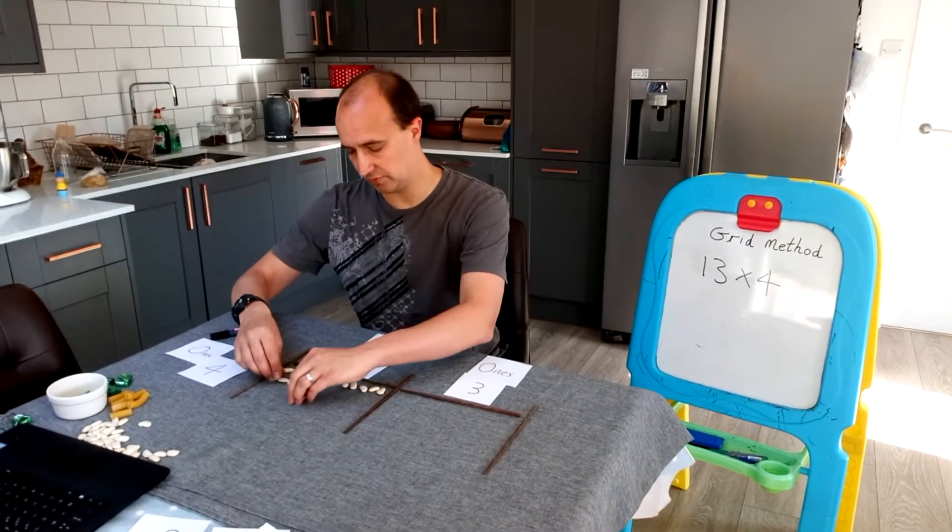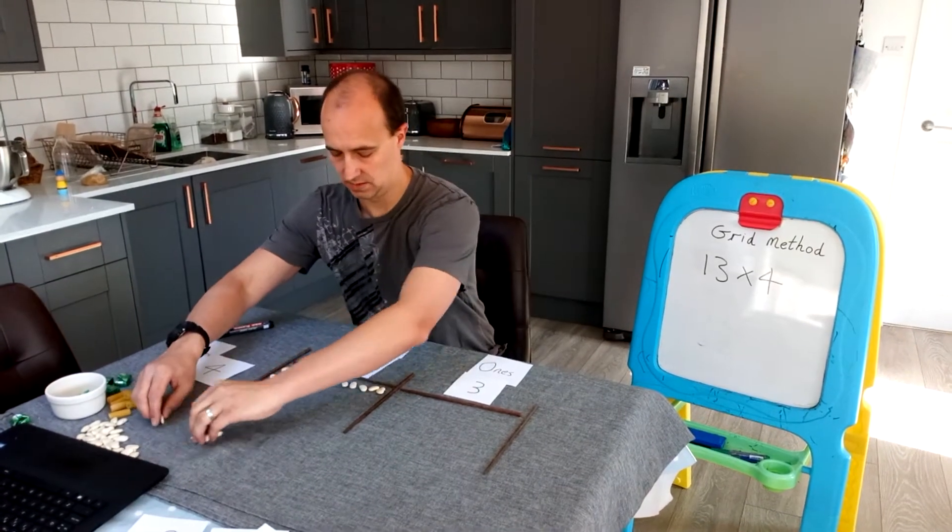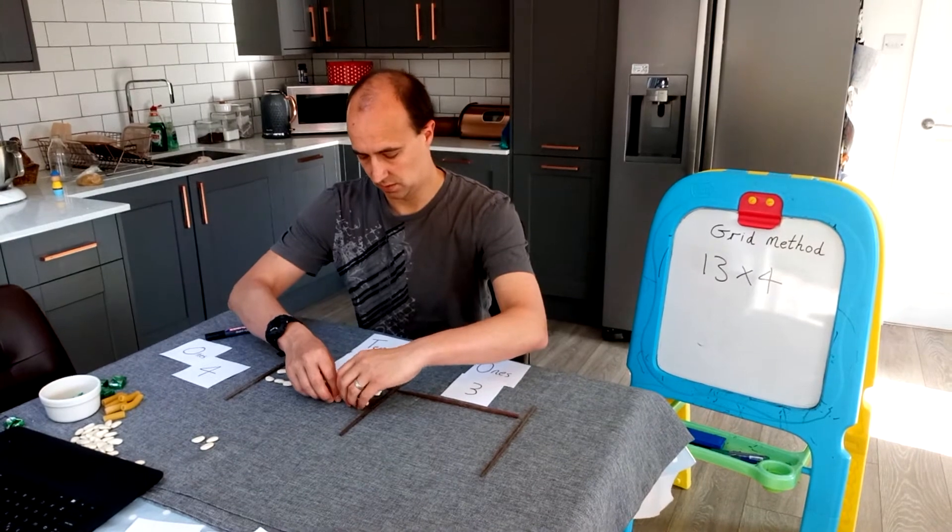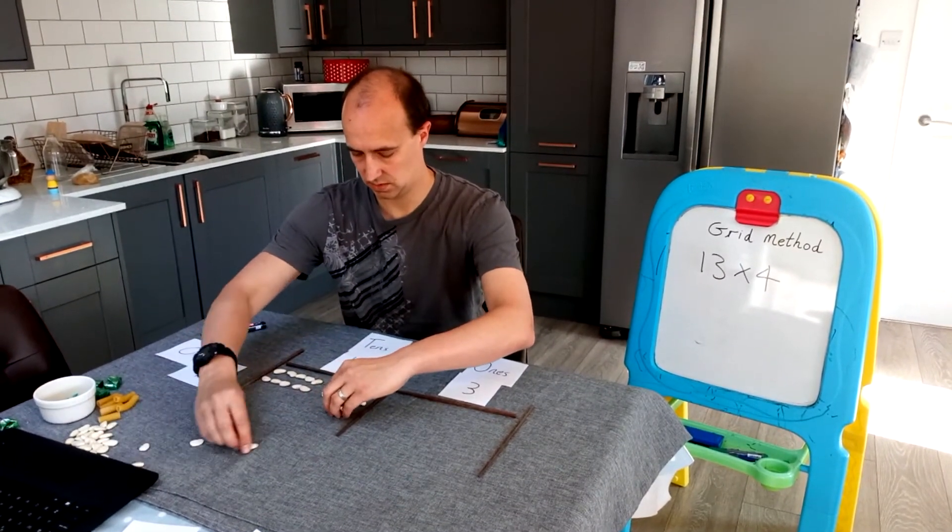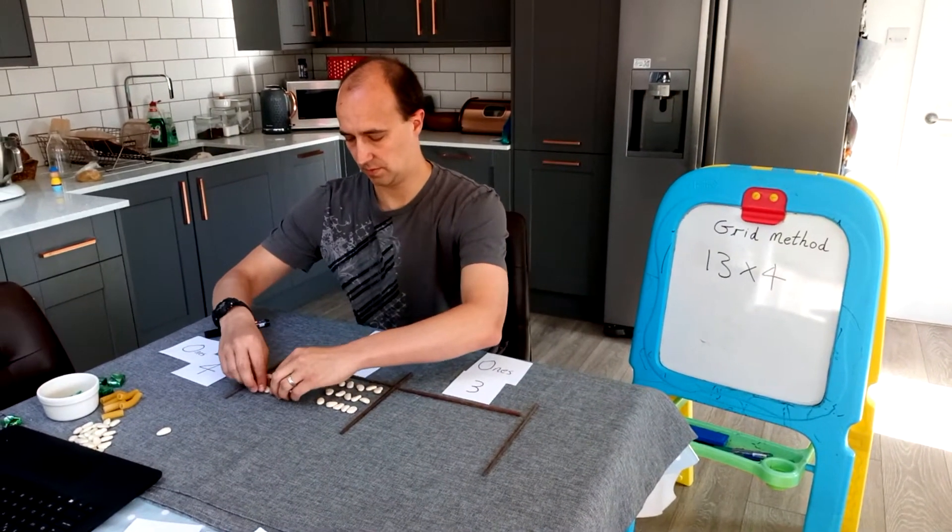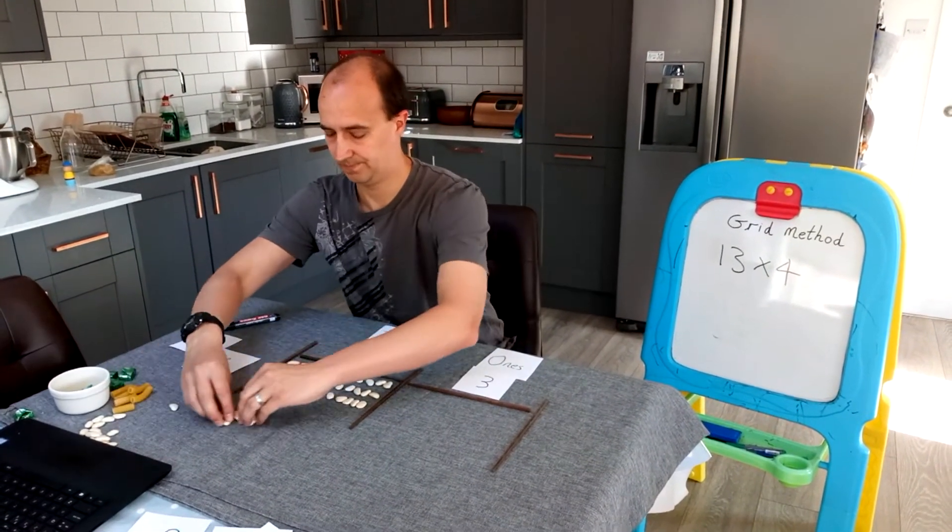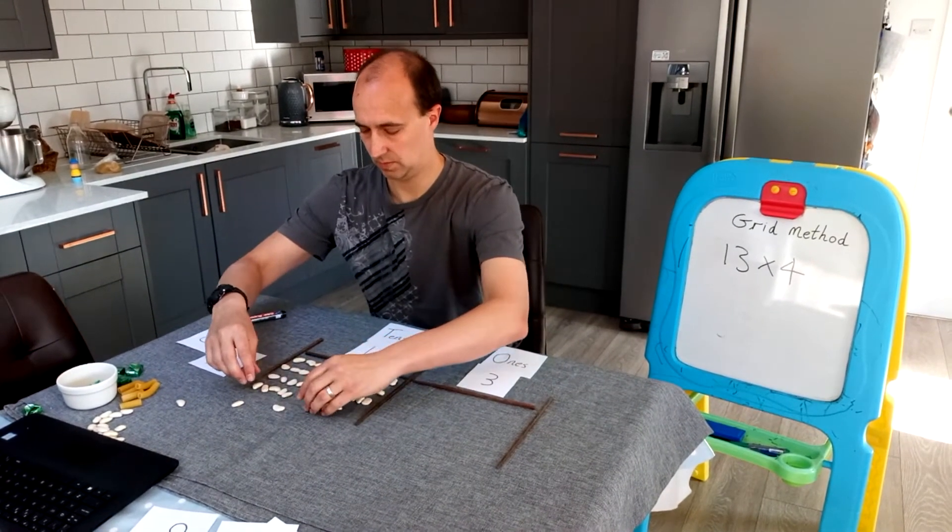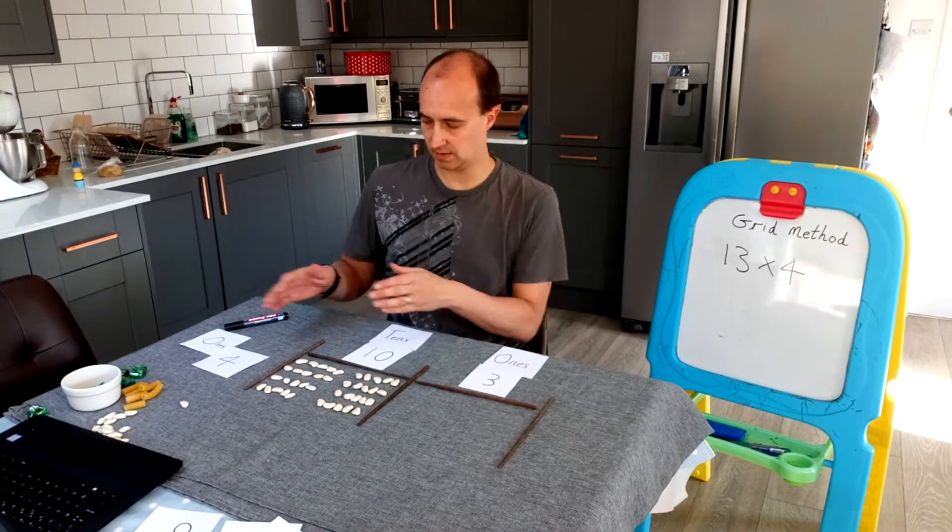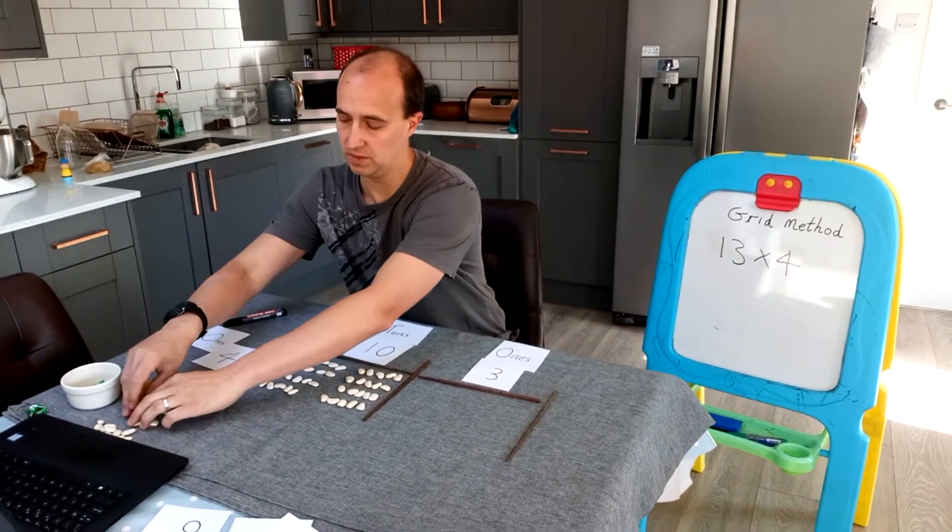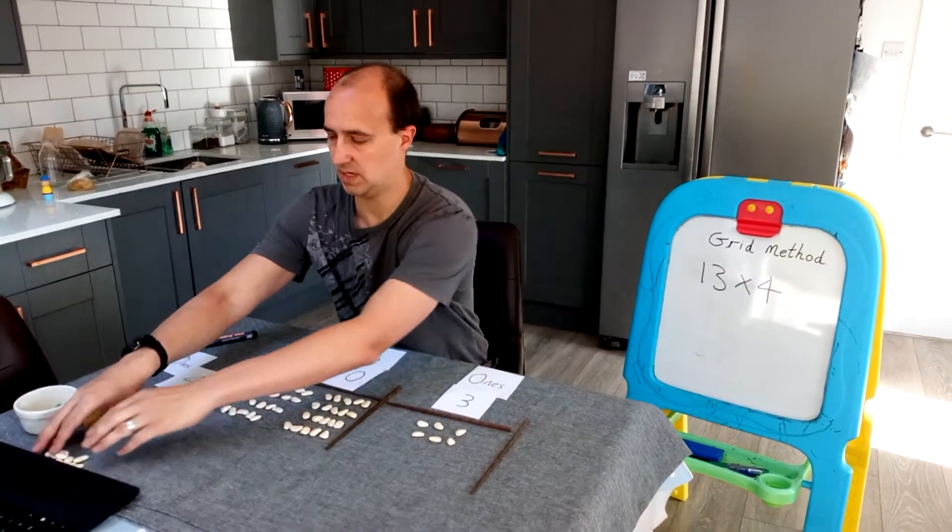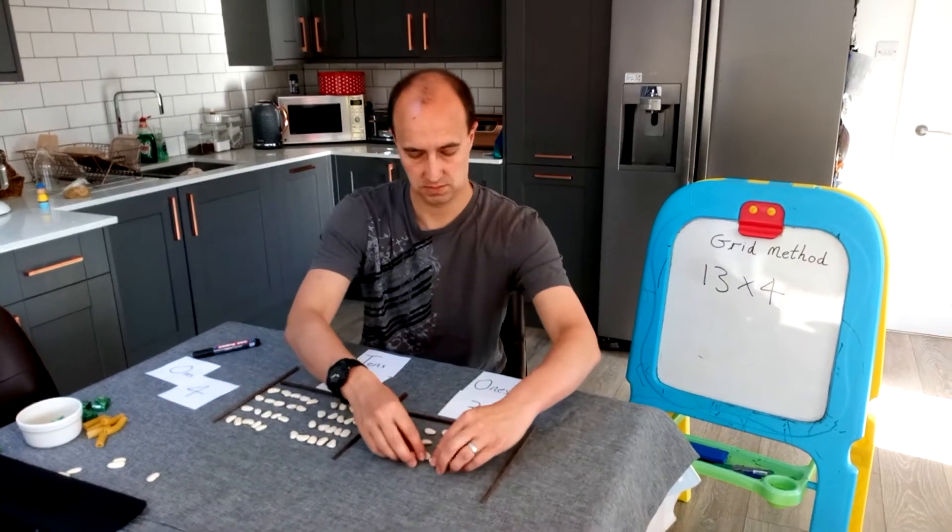So I'm going to start with an array, I'm going to do my 4 lots of 10. So here is my lots of 10. So I've got 1 lots of 10, 2 lots of 10, 3 lots of 10. And then that's 4 lots of 10, and then I need 4 lots of 3, or 3 lots of 4. So here's my 4 rows of 3.